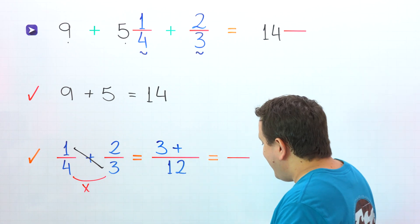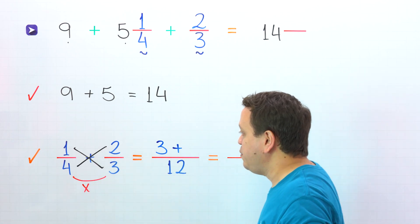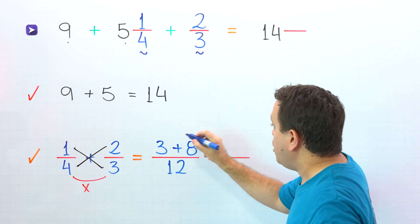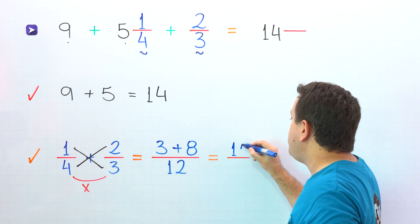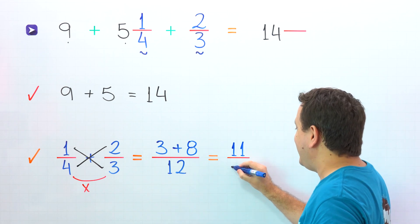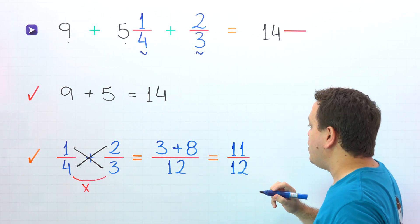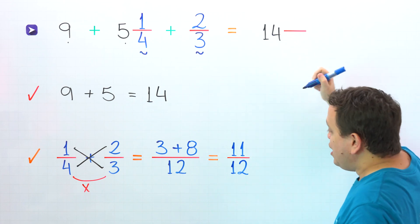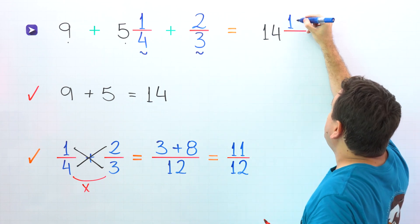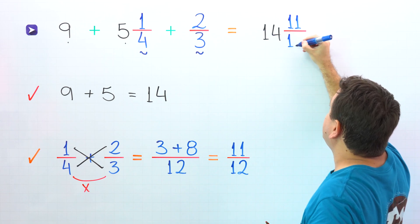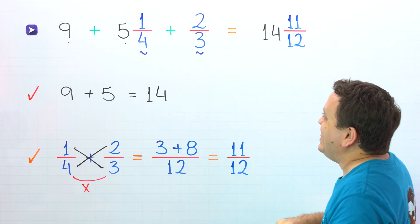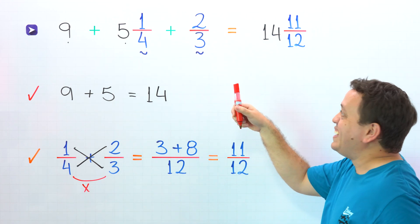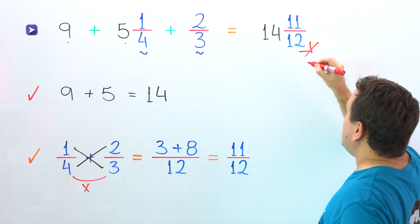Then comes the plus sign. On the other side, we have 4 times 2, and 4 times 2 gives us 8. 3 plus 8 is 11, and then the denominator stays the same — 12. Finally, we add 11 twelfths to 14 wholes. So we put 11 twelfths next to 14 wholes. In that way, 9 plus 5 and 1 fourth plus 2 thirds gives us 14 and 11 twelfths.